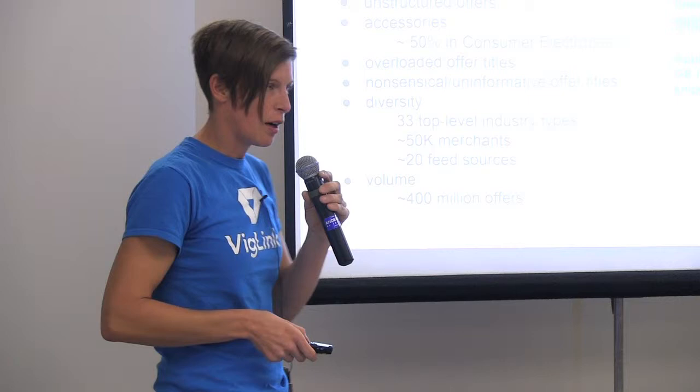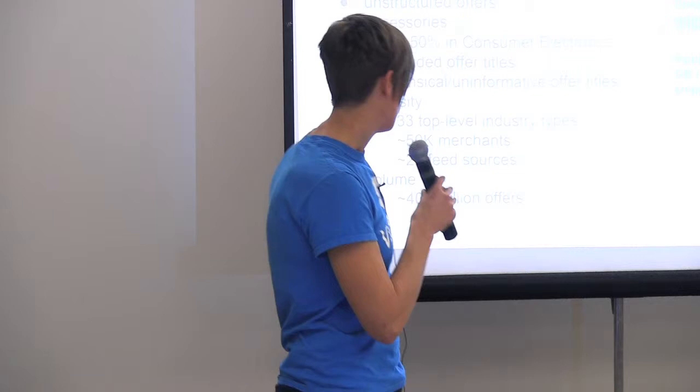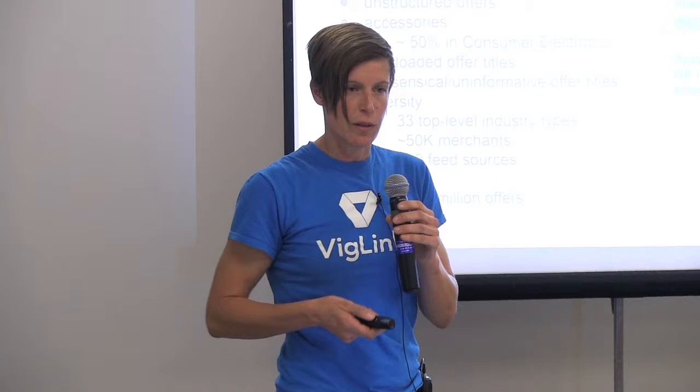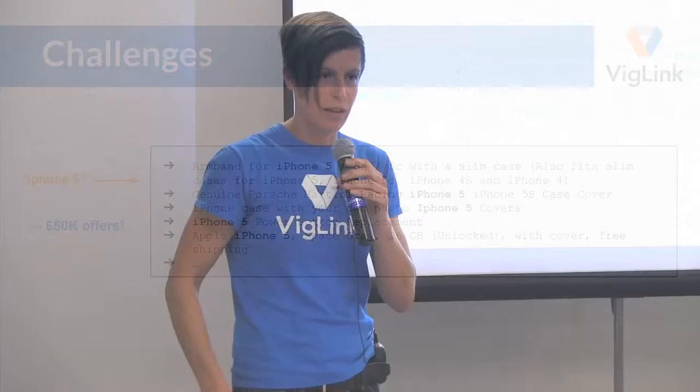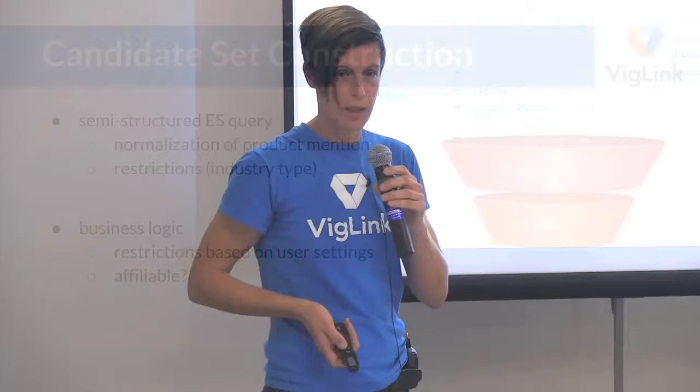Linking is hard because of high diversity — we have about 30 different industry types, starting from beauty products, going to home and garden, over automotive to consumer electronics. We have a lot of different versions and everybody has 20 feed structures, all structured a little bit differently. And it's just pure volume: a couple hundred million offers from which we have to select the best ones — semantically the best and those which optimize revenue for us. Just to give you an idea, when looking for 'iPhone 5,' we find 650,000 offers which contain this, and not all of those you actually want.